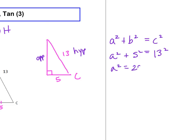So, a squared plus 5 squared equals 13 squared. 5 squared is 25. 13 squared is 169. Then we subtract 25 from both sides. a squared equals 144. Square root both sides, and you get a equals 12.